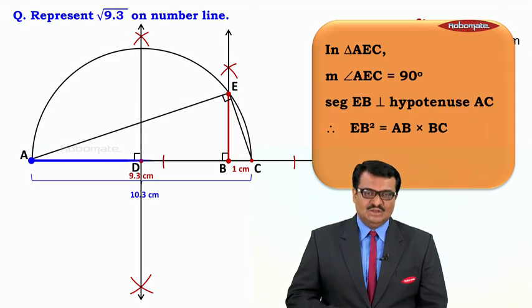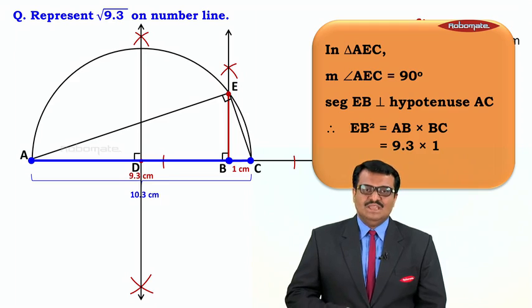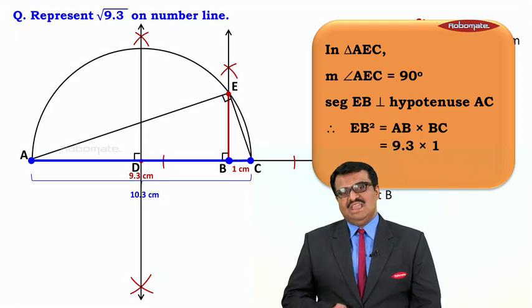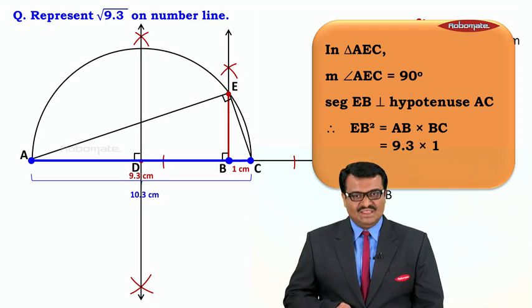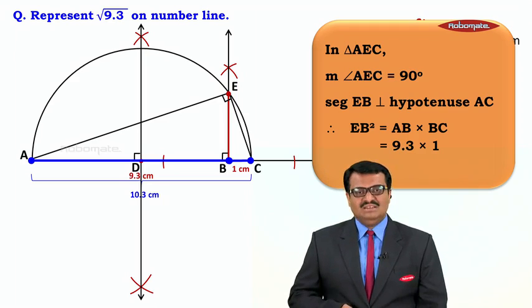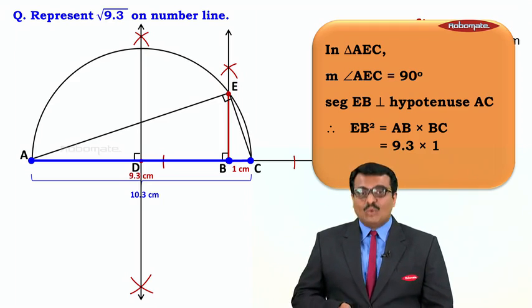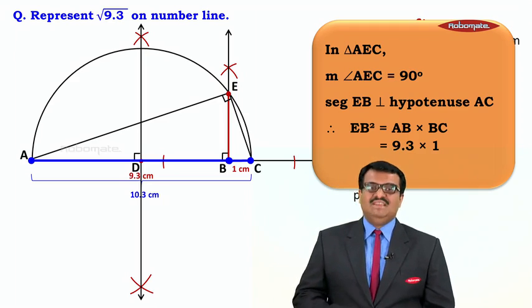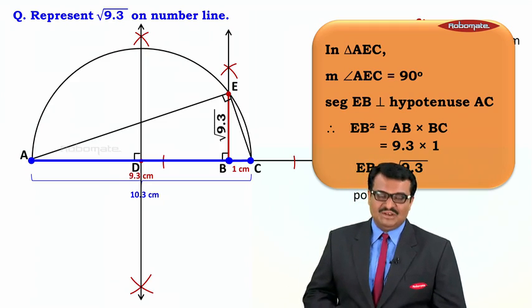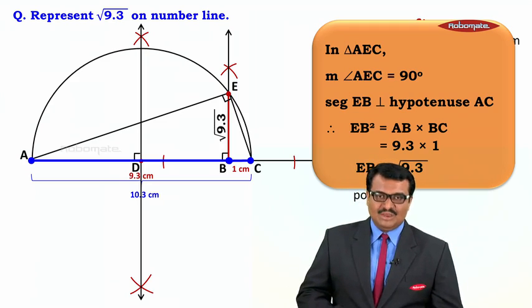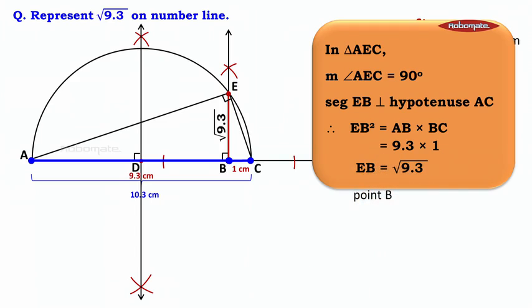So we can say EB² = AB × BC. EB² = AB × BC; AB is 9.3 and BC is 1, so EB² = 9.3 × 1 = 9.3. Therefore EB = √9.3. The length of EB is √9.3.